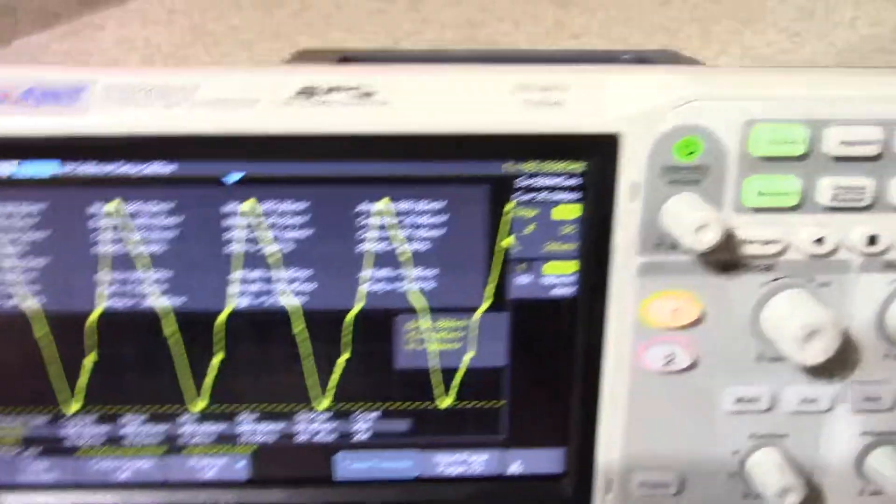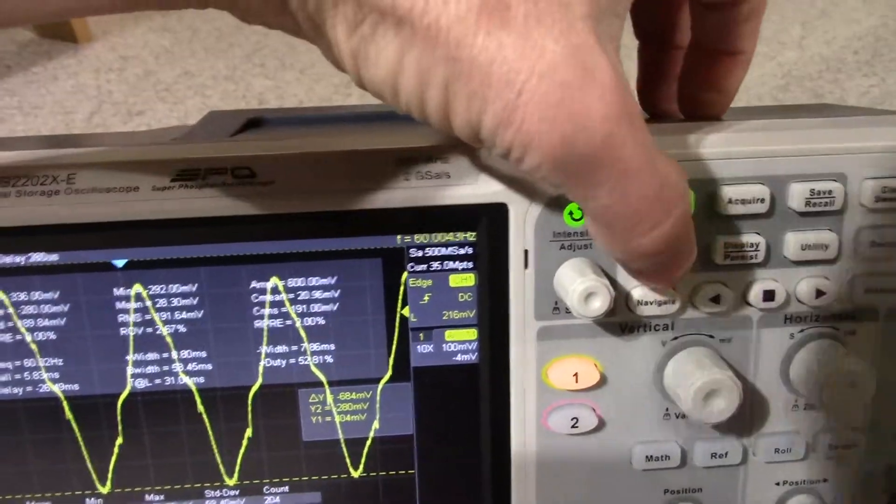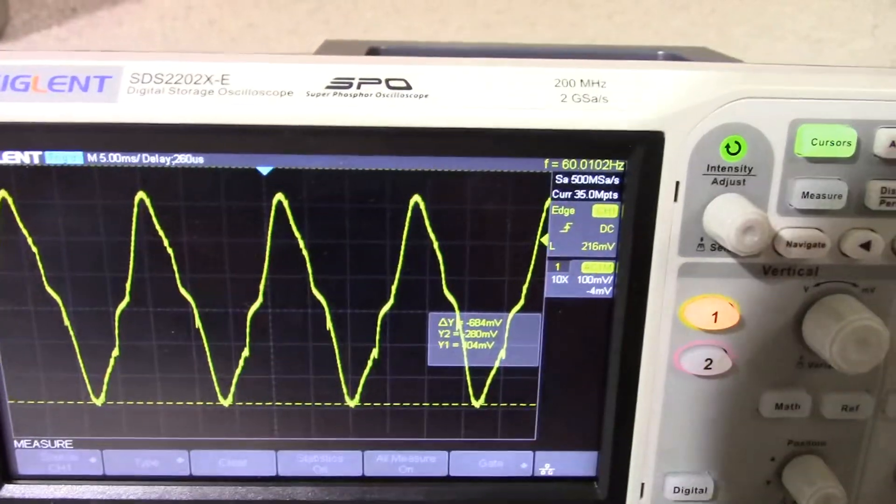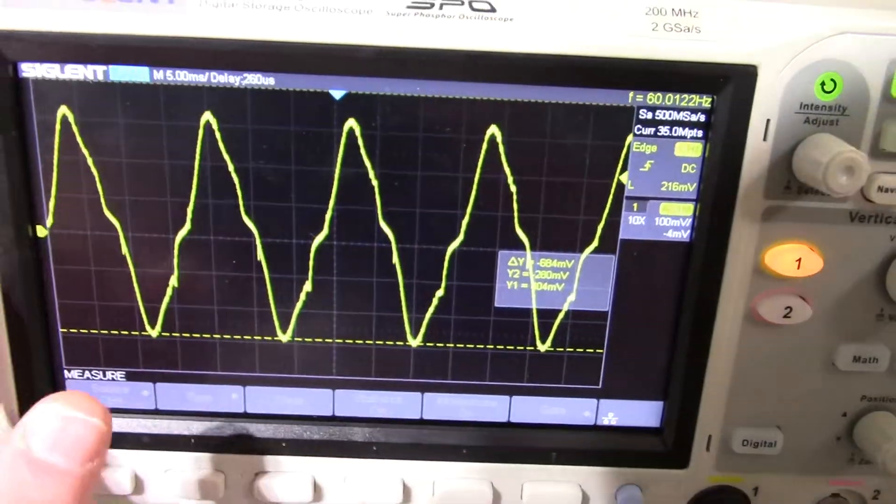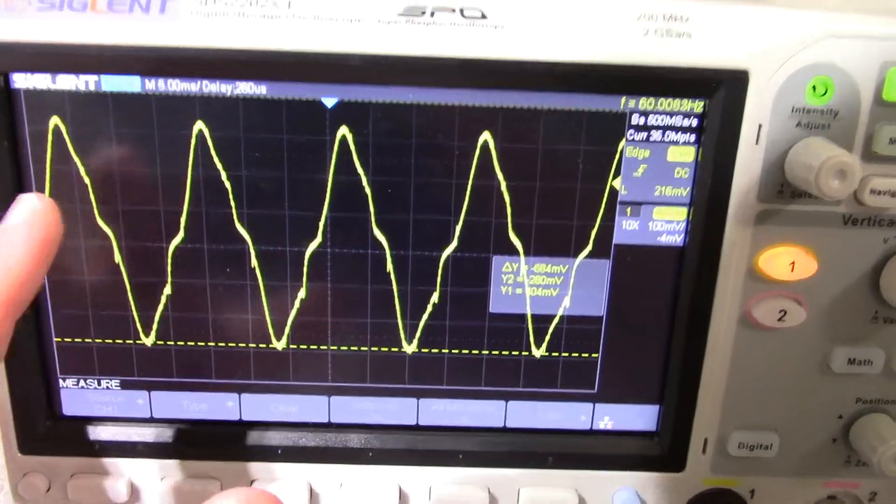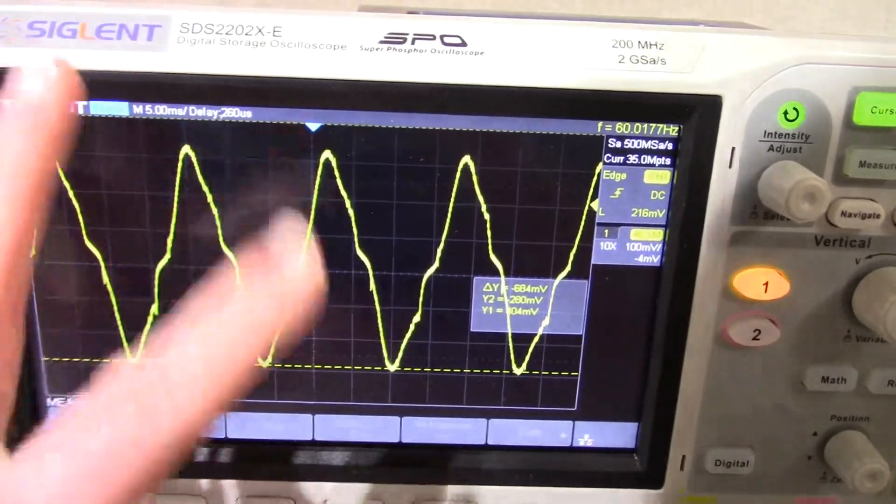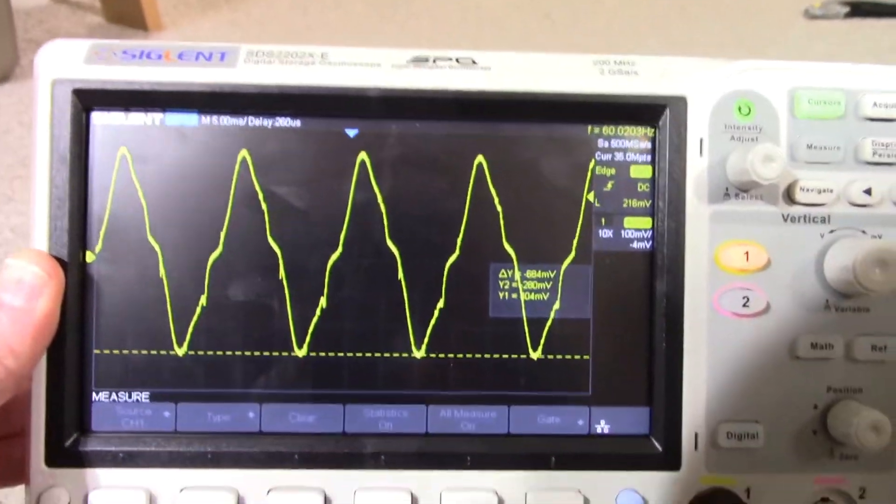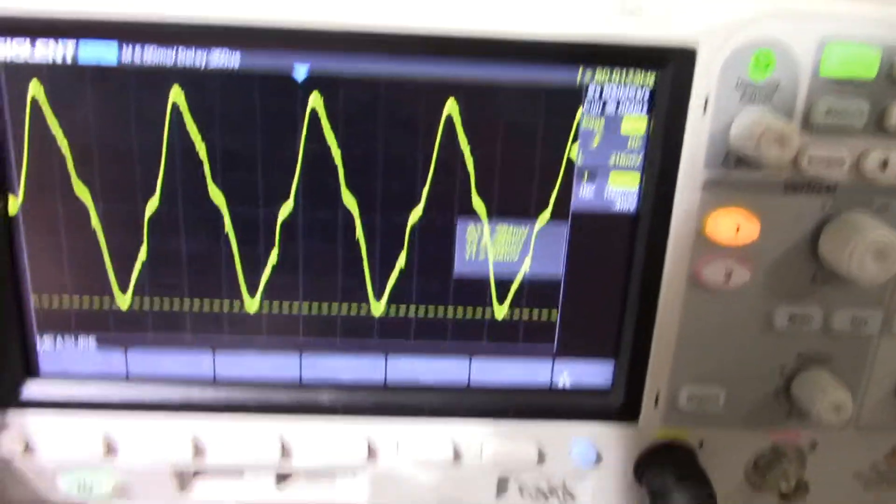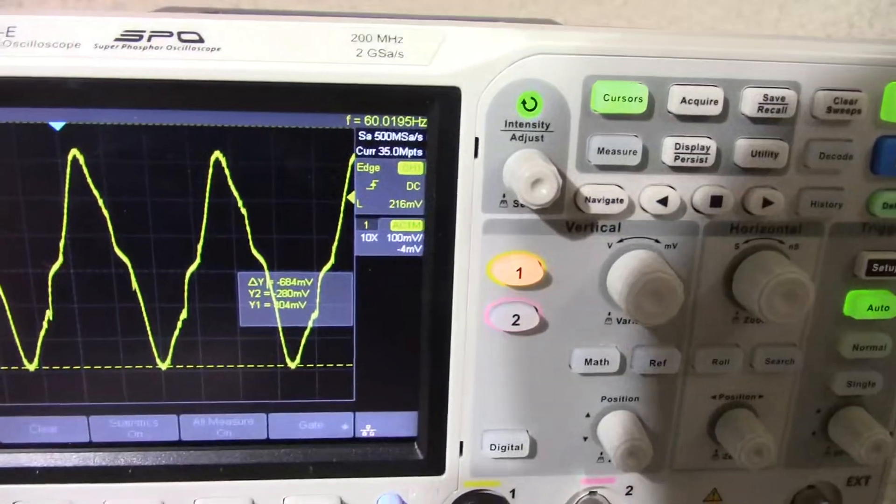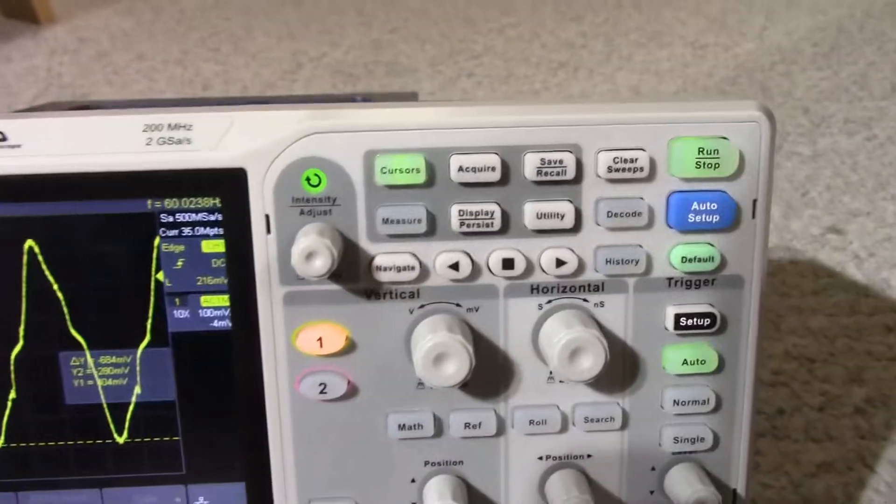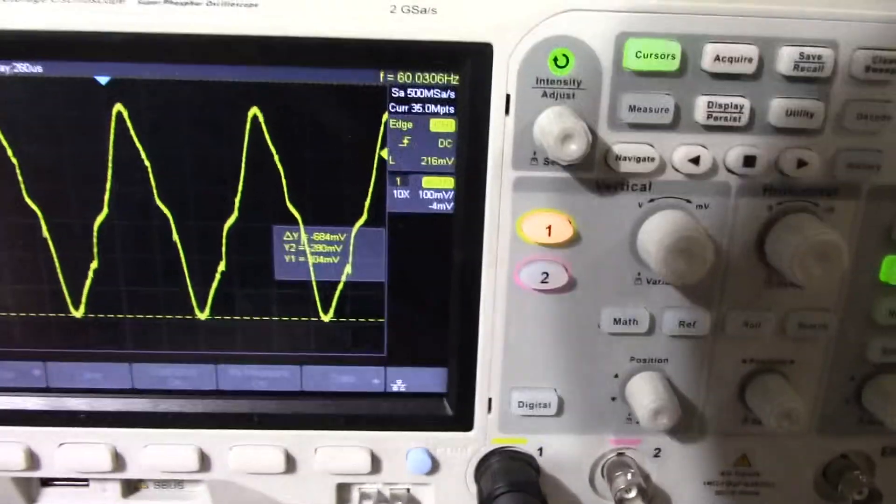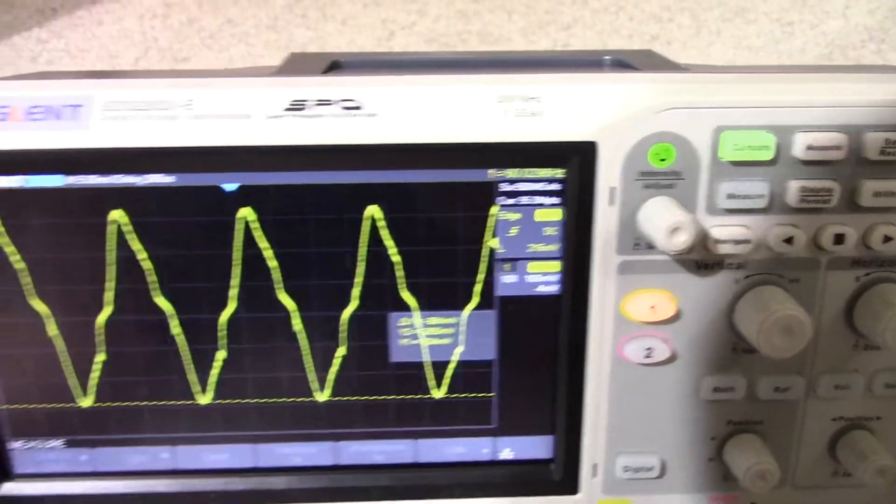But yeah, that is pretty nice. Turn that off. It's got that phosphor type display where, I mean it's an LCD, but it's supposed to emulate a phosphor type analog scope. And here's the controls. Yeah, that is super nice. Really appreciate that.